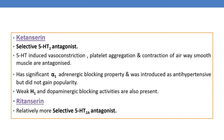The next drug is ketanserin. It is a selective 5-HT2A antagonist. 5-HT-induced vasoconstriction, platelet aggregation, and contraction of airway smooth muscle are antagonized by ketanserin. It has a significant alpha-1 adrenergic blocking property and was introduced as an antihypertensive but did not gain popularity. It also has weak H1 and dopaminergic blocking activities.